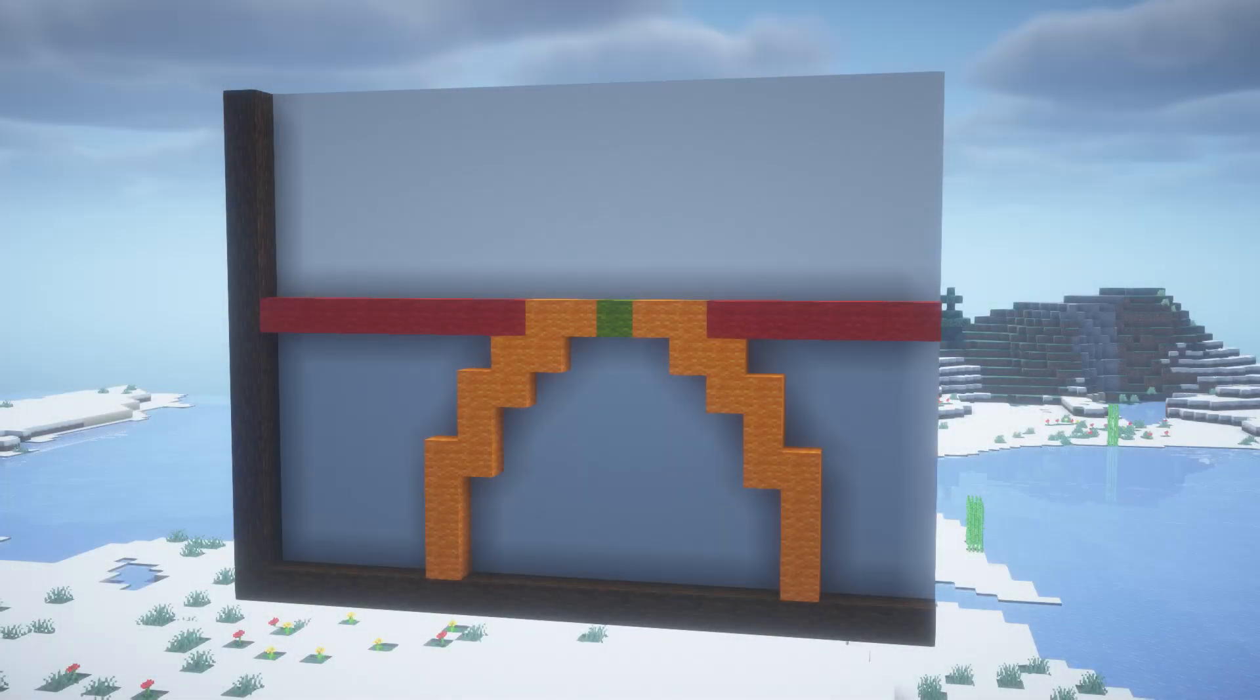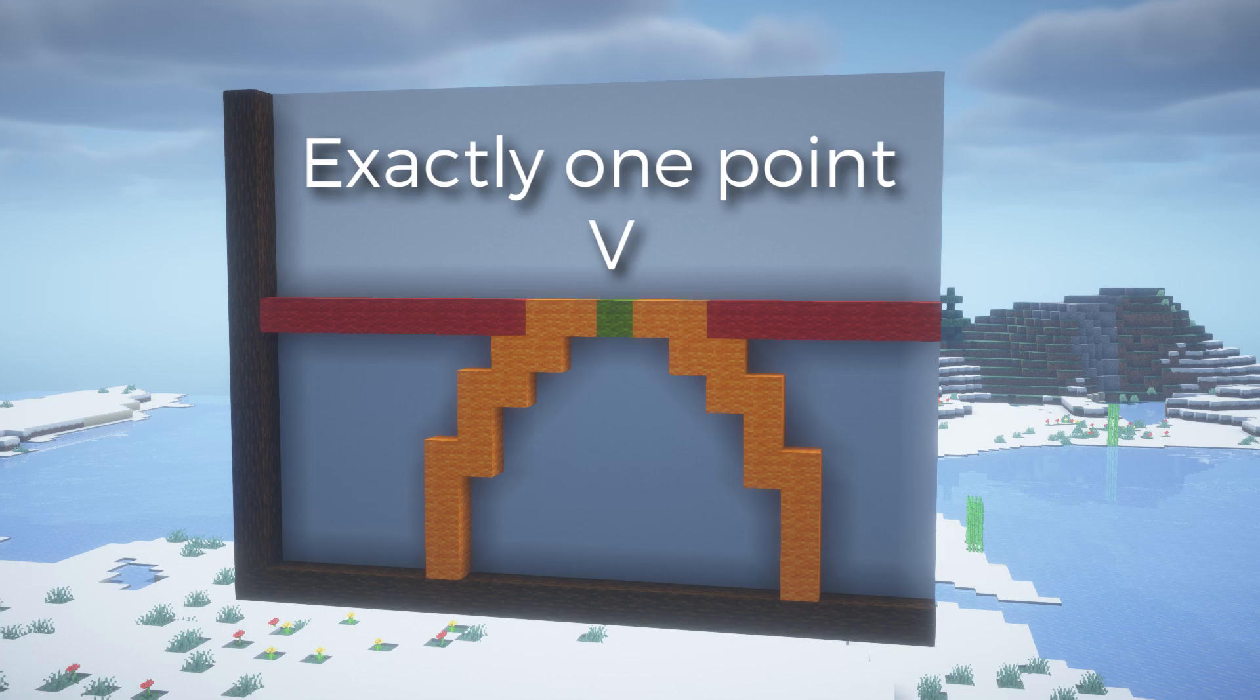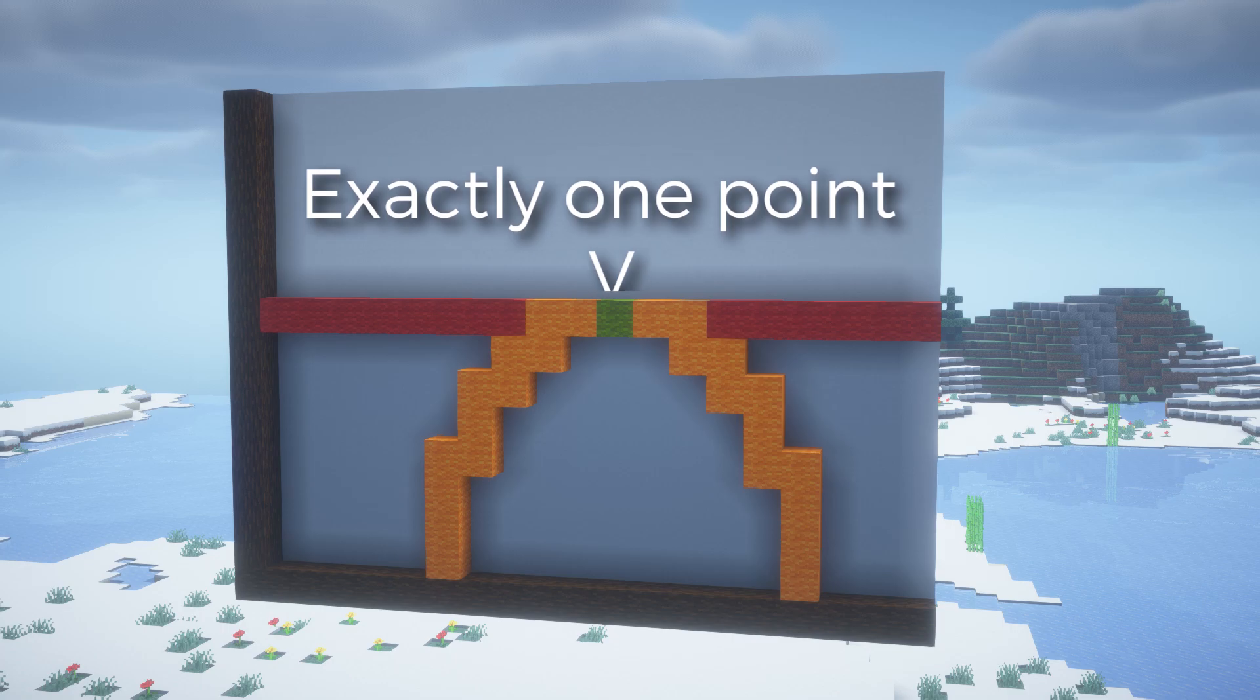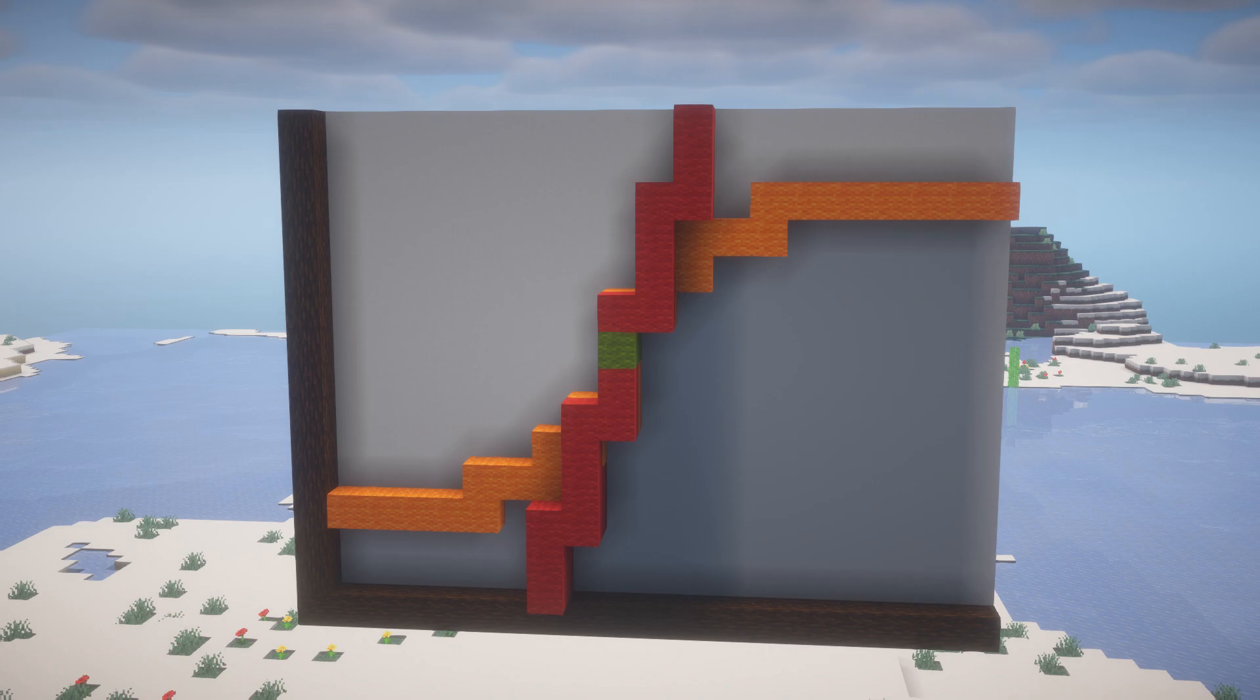A tangent line is a straight line that touches a curve at exactly one point. That's kind of the textbook definition, but essentially it is a line that represents the slope of the curve at that single point.